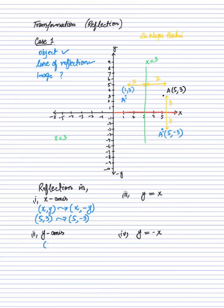The second case is reflection across the y-axis. The general formula is that x comma y maps onto minus x comma y. For example, the point with coordinates 1 comma minus 4 — applying the rule, x changes sign to minus 1 while y remains minus 4. So after reflection across the y-axis, the point lies at minus 1 comma minus 4.